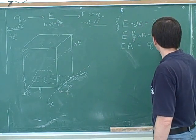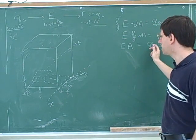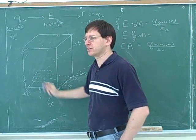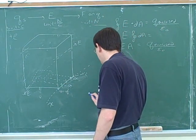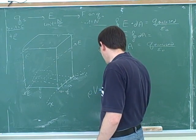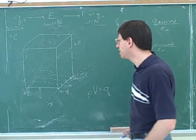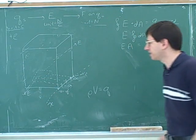So now all we have to do is find the amount of charge that's enclosed in this Gaussian surface. Well, remember we're going to try to use the density to do that. We know that the density times the volume will give us the enclosed charge. So we need to figure out the volume now of this.